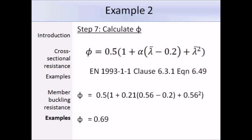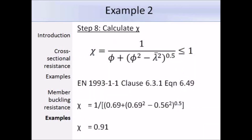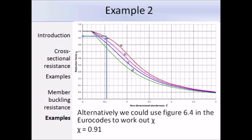With phi and lambda bar known, we can calculate chi. Using the expression with φ = 0.69 and λ̄ = 0.56, we get χ = 0.91. This can also be verified using figure 6.4 in the Eurocodes: reading up from λ̄ = 0.56 to curve A and across gives χ = 0.91, the same as the hand calculation.